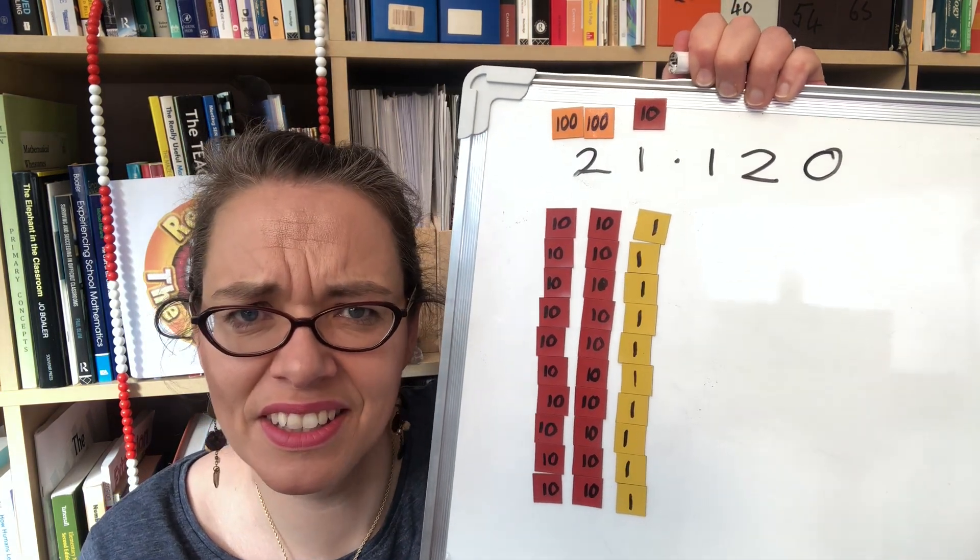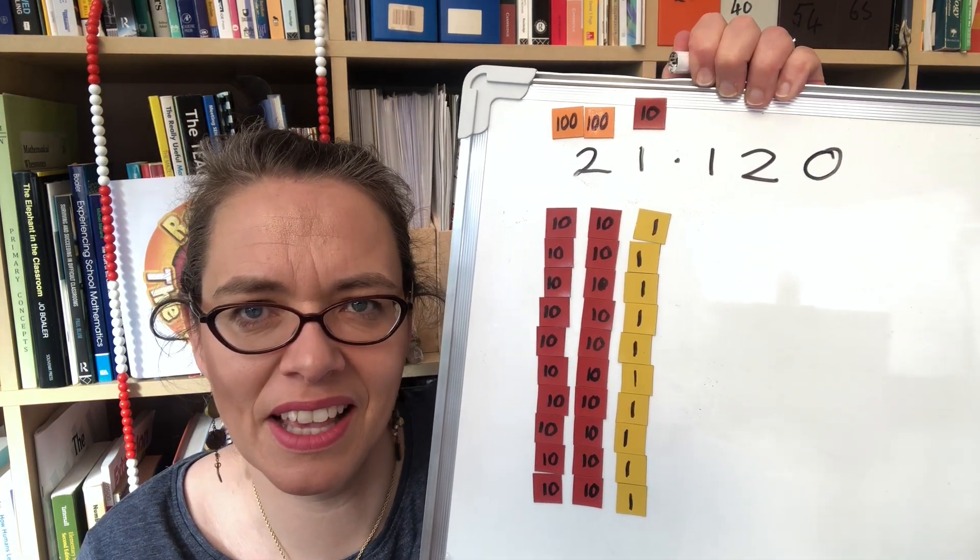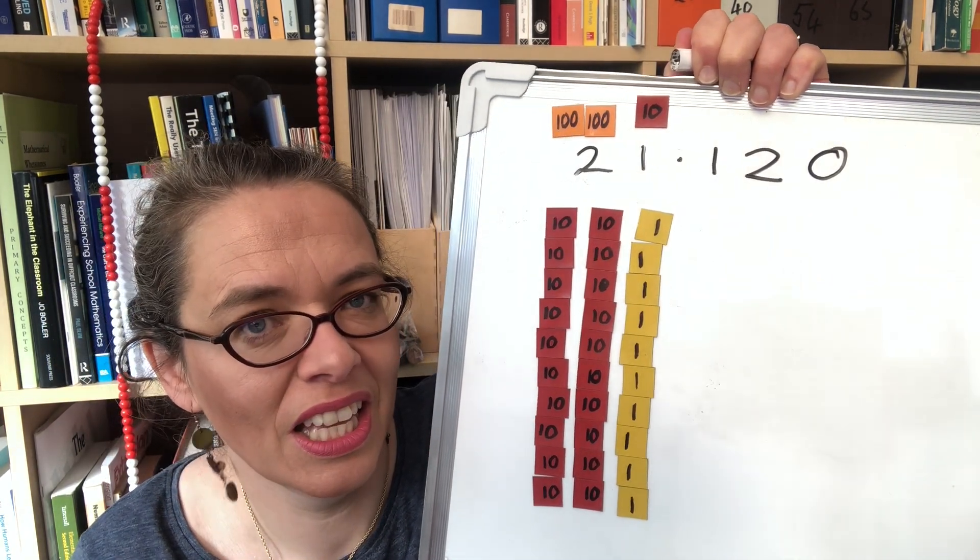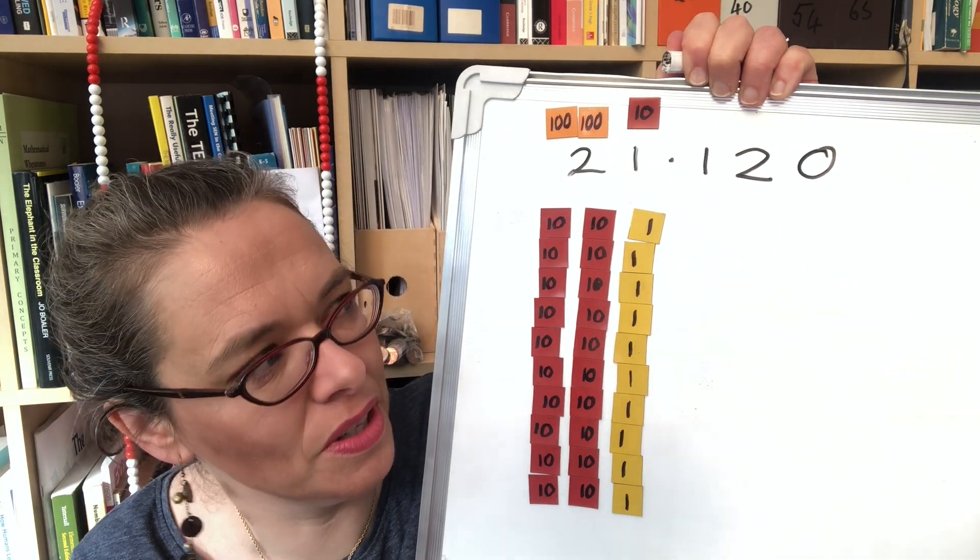Is that right? Does that actually make sense? If you've got 10 lots of 21.12 will that be 21.120?